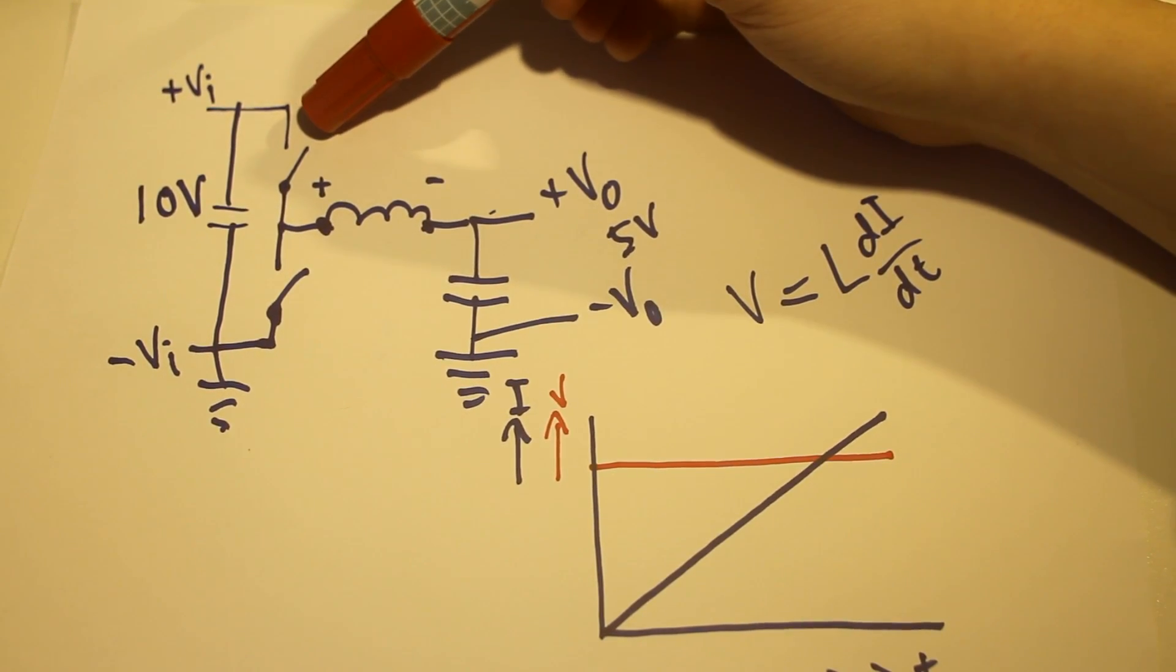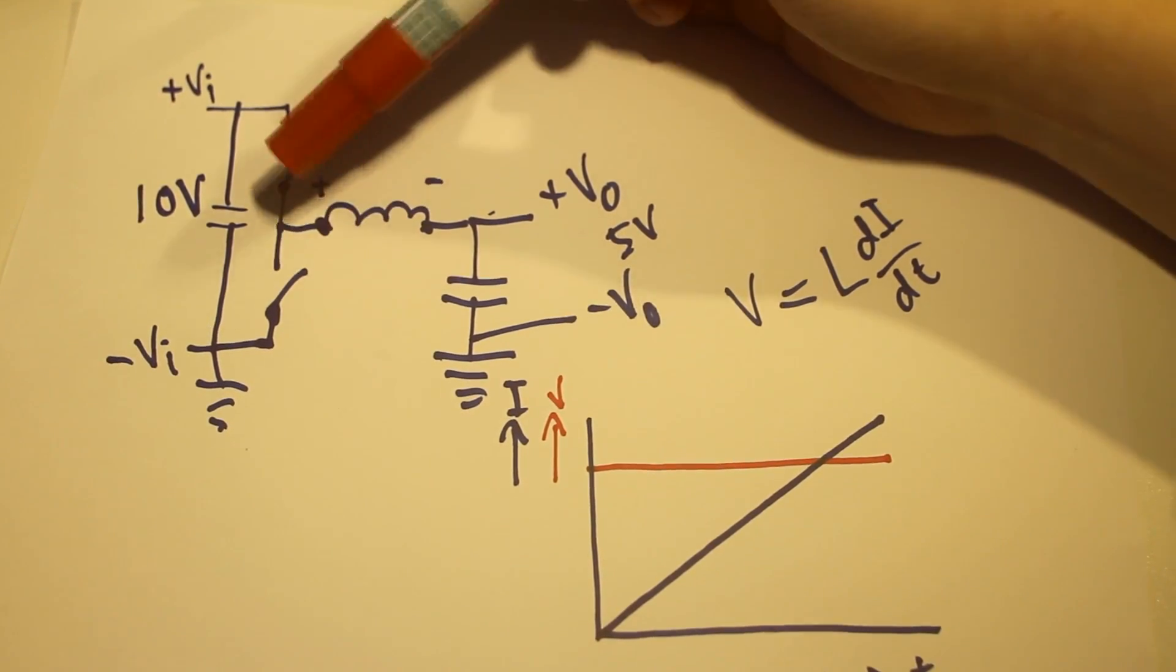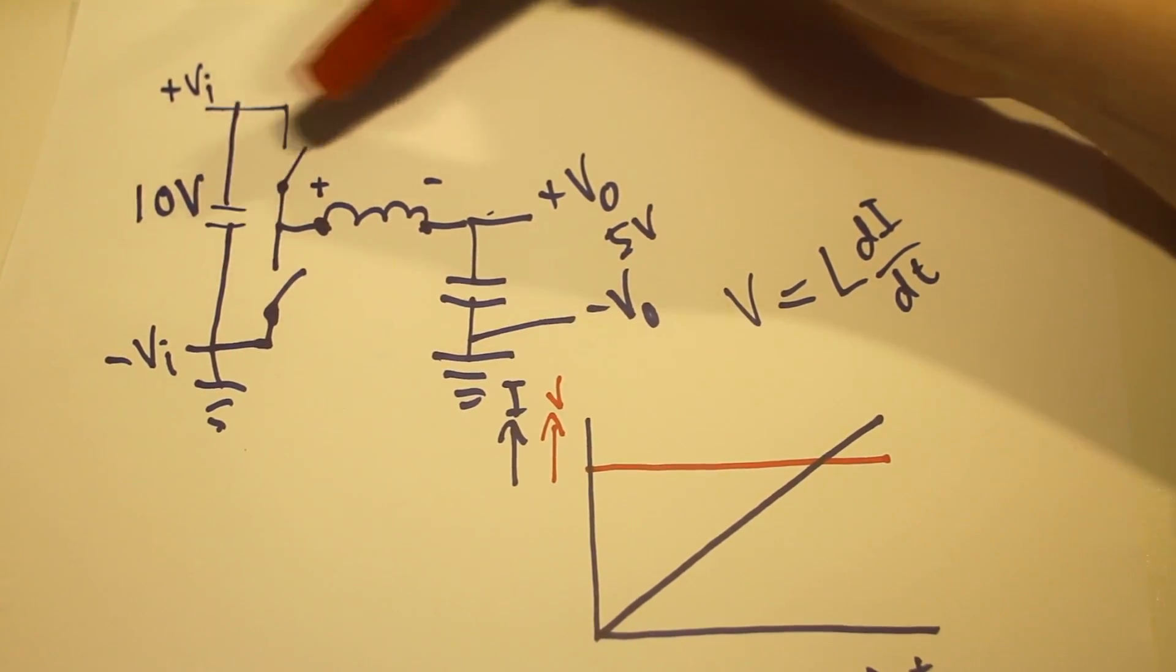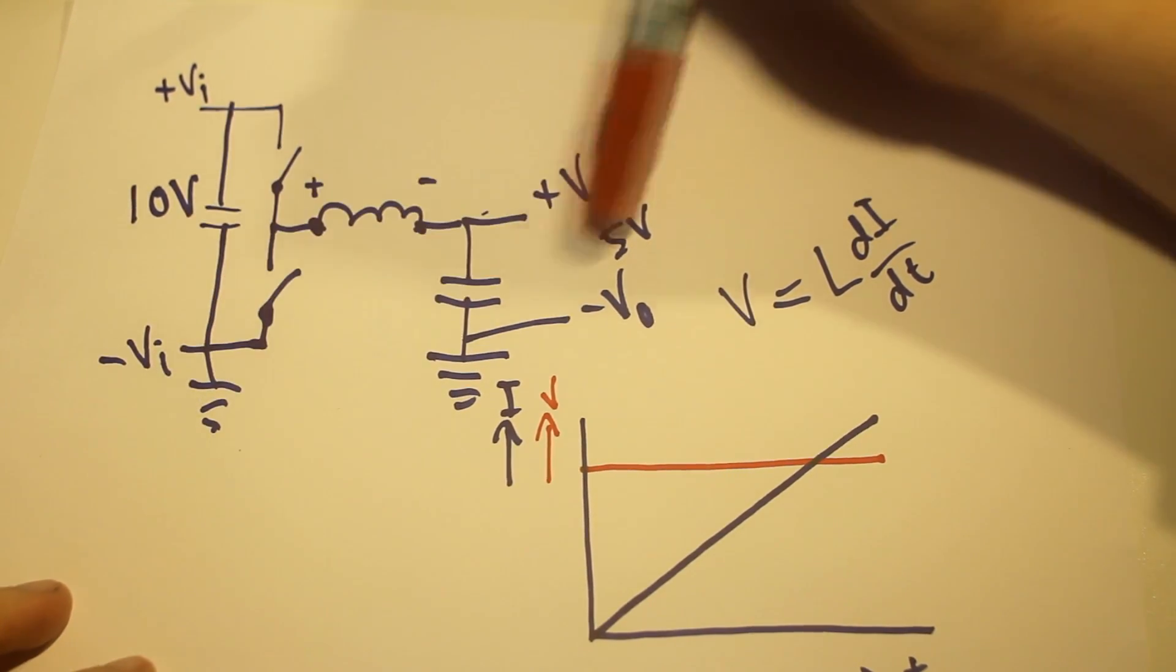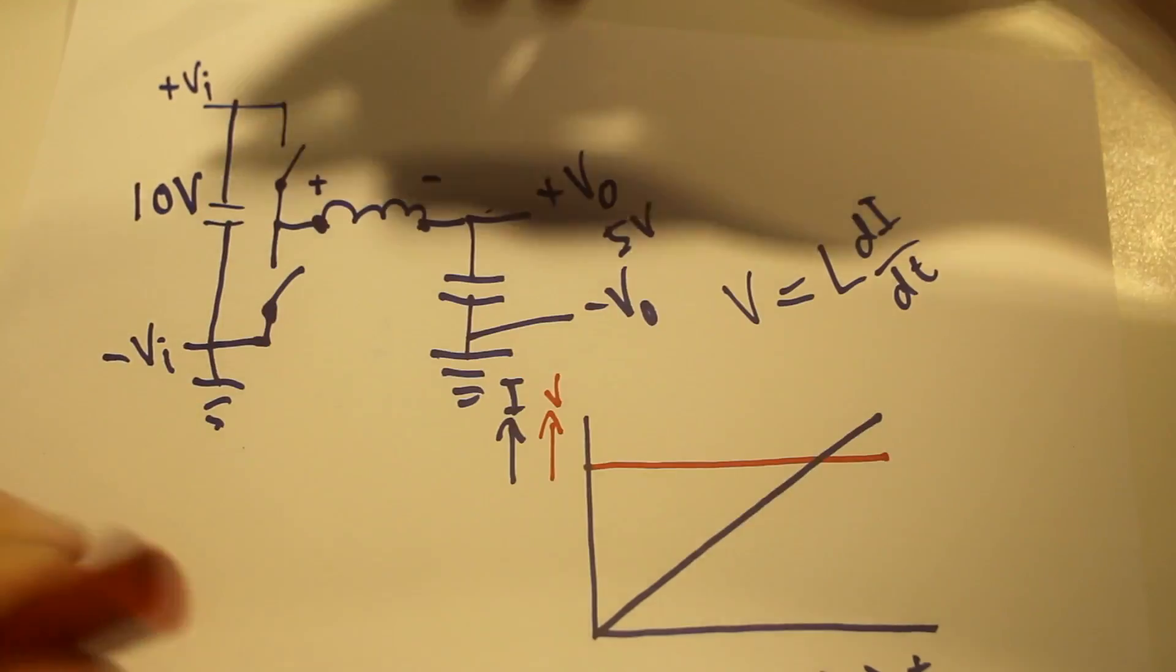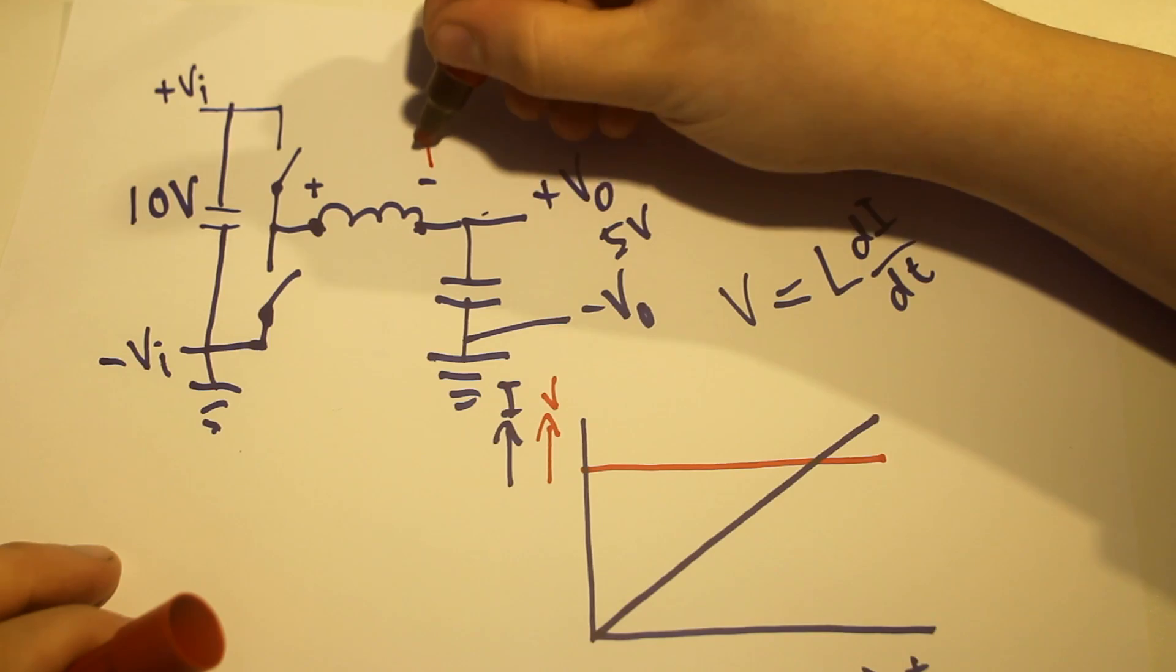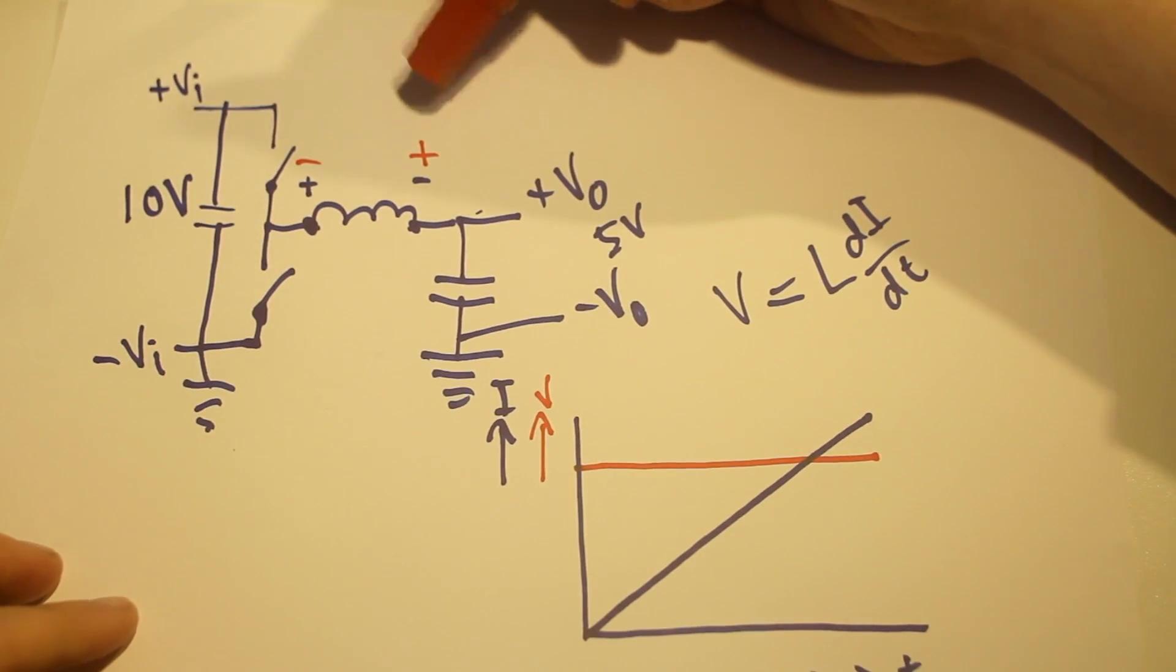So let's just do the basically only other thing we can do. Let's close this switch. Now there is a current path here, but on the input there is zero volts, and on the output there is five volts. So the sign of the voltage has changed. This is now the positive side, and this is now the negative side of the inductor.